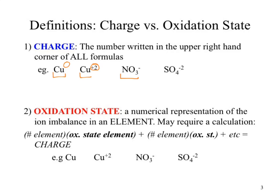What's our charge on nitrate? Negative one. Charge on sulfate? Negative two. So we look in the upper right-hand corner for all of those. We've got all our charges. When we move to oxidation state, it applies to an atom, and only an atom.